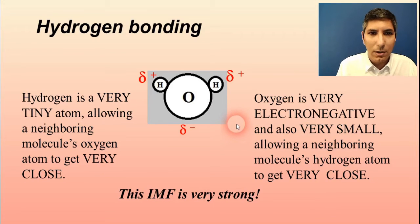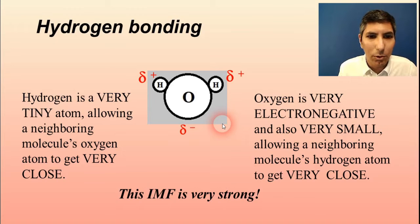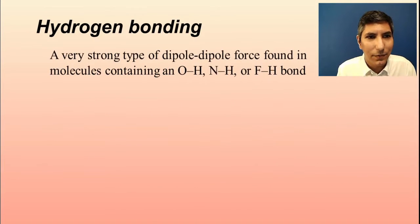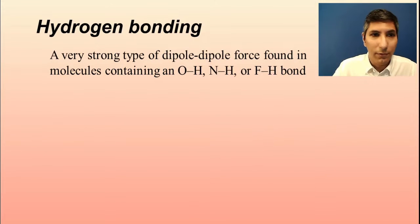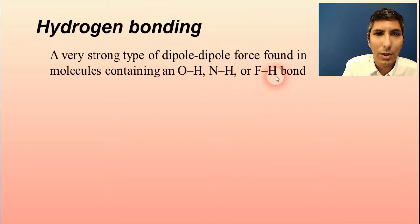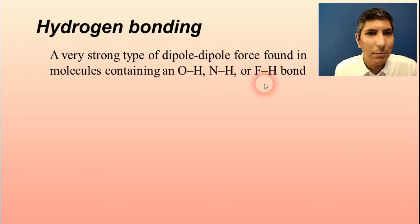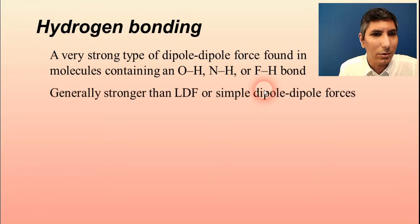This is basically Coulomb's law — the closer the distance between the molecules, the stronger the intermolecular attraction. This intermolecular force is very strong, a whole lot stronger than just your everyday run-of-the-mill dipole-dipole force. A hydrogen bond is a dipole-dipole force, but a very strong form of it, and it's only going to be found in molecules that contain an O–H bond like in water, an N–H bond, or an F–H bond. If you see one of those combinations, that's the tip-off that you're going to have hydrogen bonding — a very, very strong force.